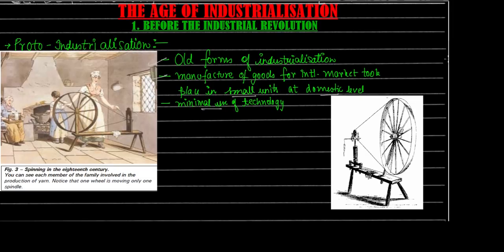This image is from the NCERT textbook - a woman and family are here, trying to produce some weaving or spinning. They are spinning basically. This is an example of proto-industrialization. You can see a very minimal use of technology - it is a domestic unit in the house. A very primitive form of technology, yet it is used for proto-industrialization. It is a small unit at the domestic level with minimal technology.